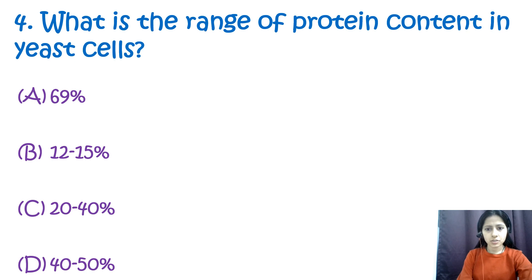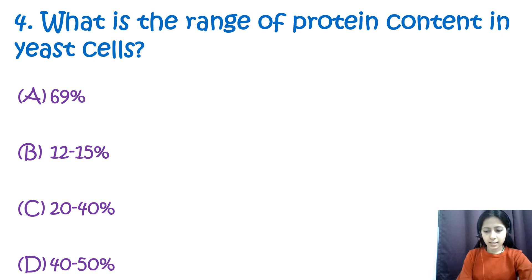Question four: what is the range of protein content in yeast cells? Option A: 69%, option B: 12 to 15%, option C: 20 to 40%, and option D: 40 to 50%. The range of protein in yeast cells is around 40 to 50% — option D.